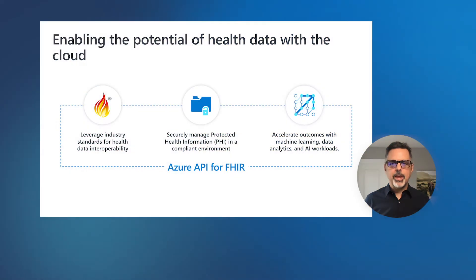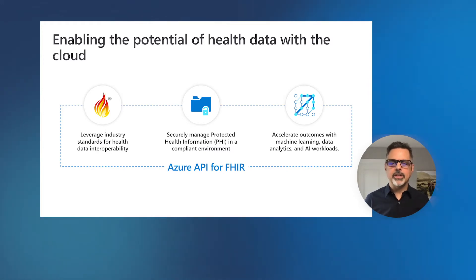As FHIR was maturing in its definition as a specification, we really started to think about how we should support FHIR in the healthcare industry in the Microsoft Azure Cloud. The Azure API for FHIR was designed to enable the potential of health data in a hyperscale cloud environment for things like machine learning, advanced analytics, and artificial intelligence. We designed the Azure API for FHIR to leverage the existing health data standards for interoperability — the HL7 FHIR specification — meaning any system that can exchange data according to the FHIR specification can exchange data with the Azure API for FHIR.